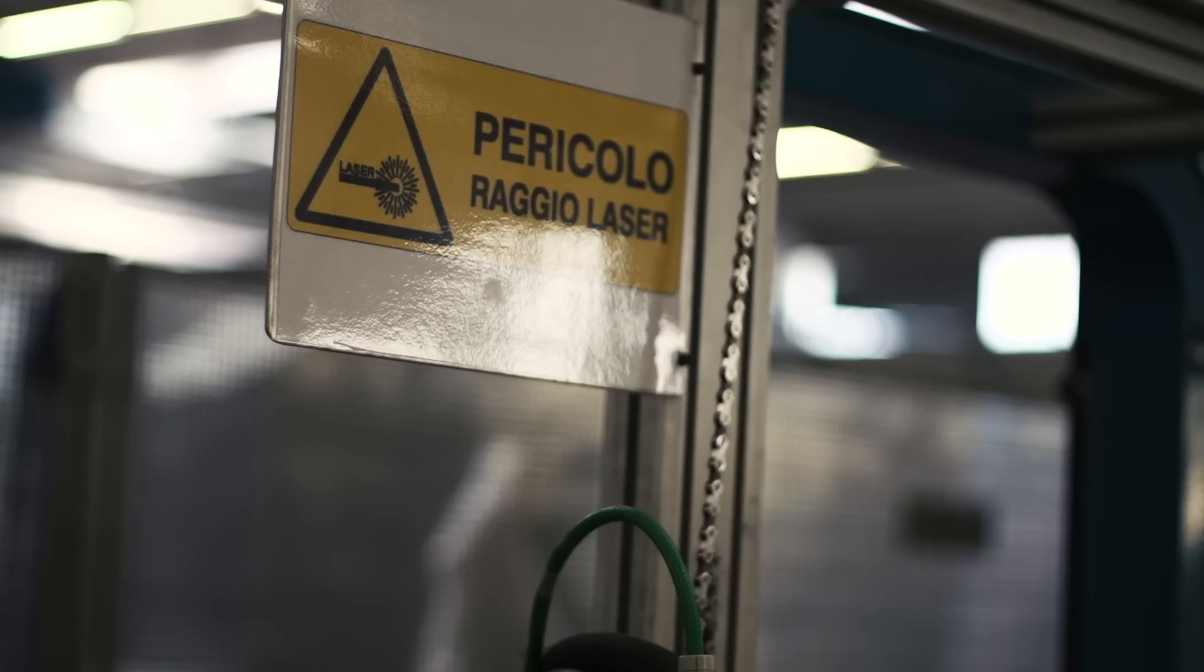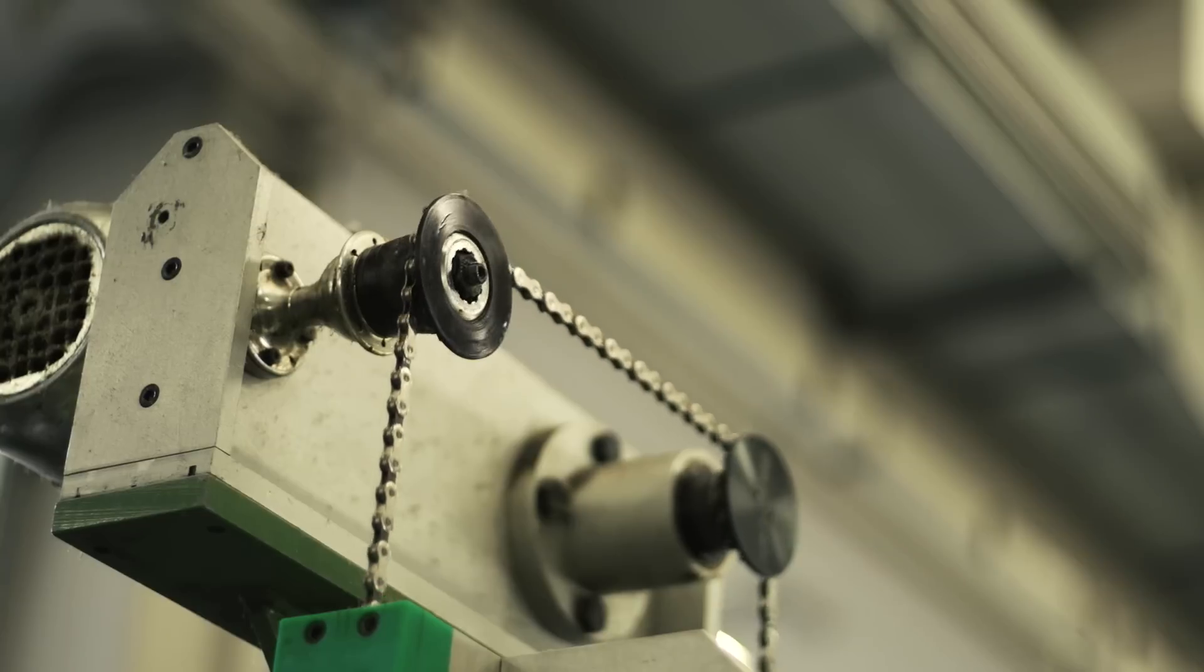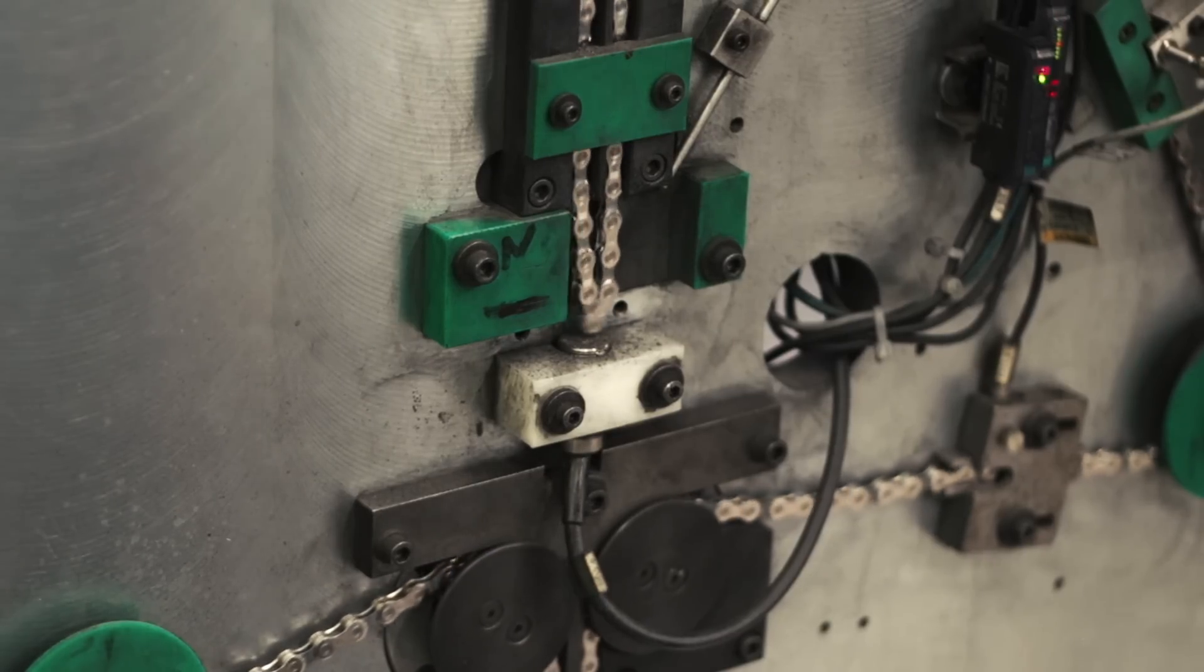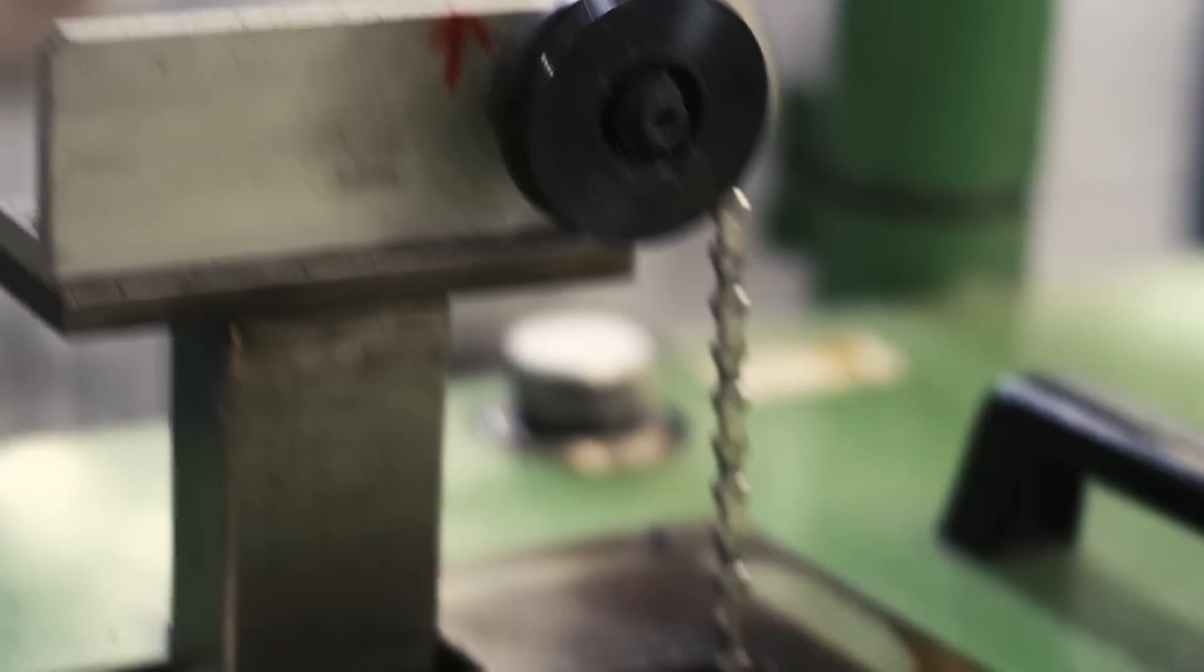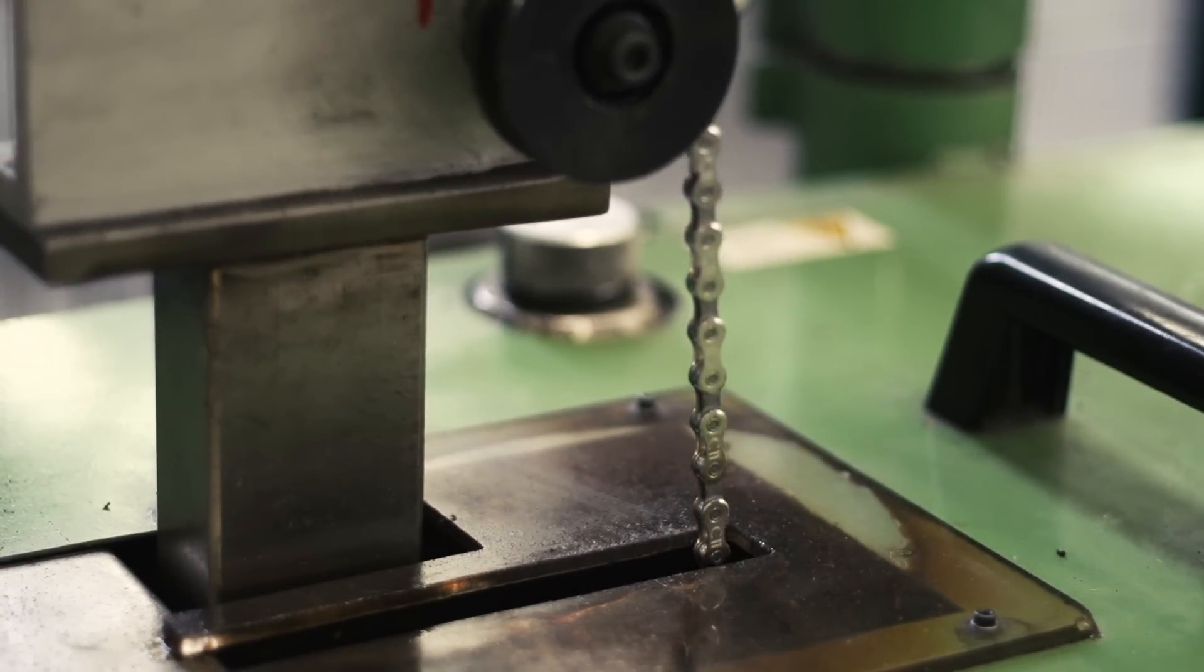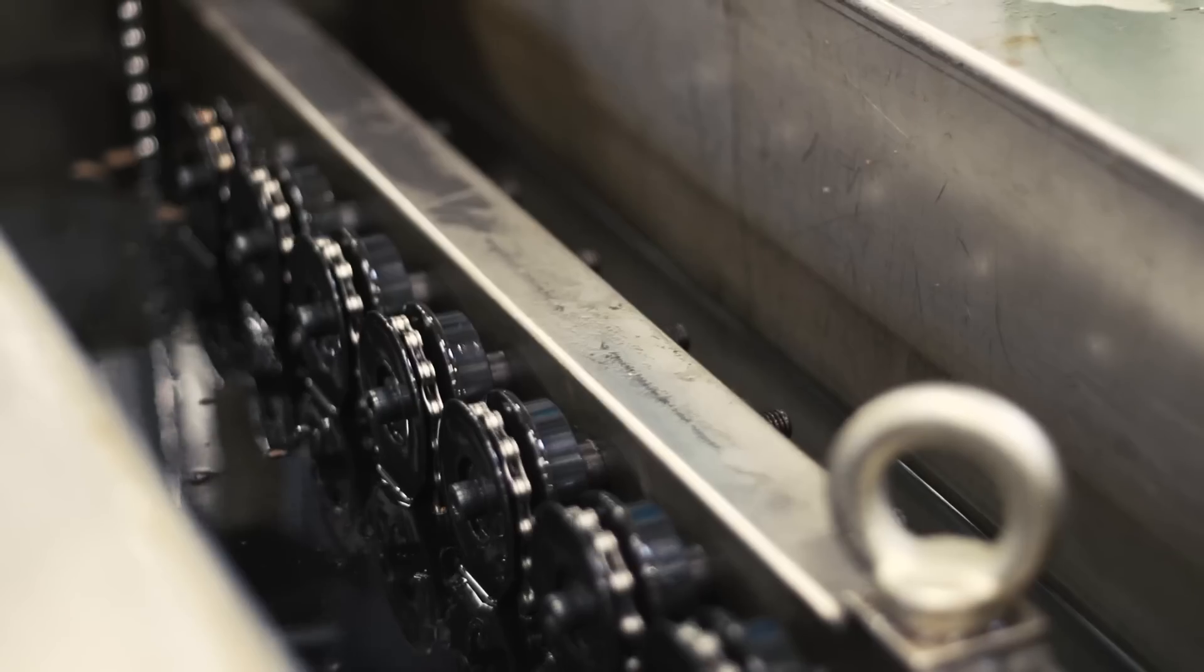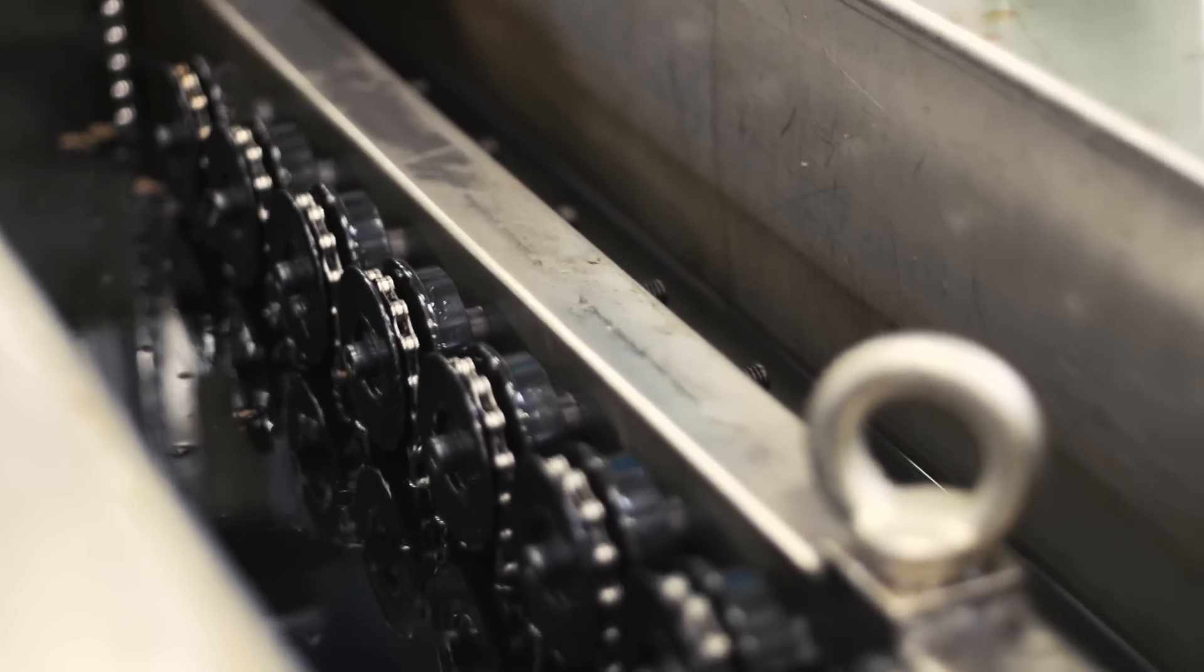The final test is to check that all the links are moving freely. This whole process is to ensure that there are no weak or faulty links which could lead to a snapped chain on the road. It's also an opportunity to measure the links so that the chain is of the correct length.